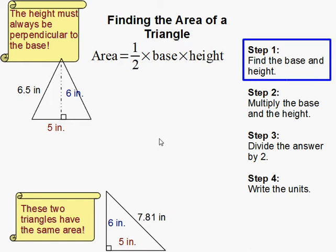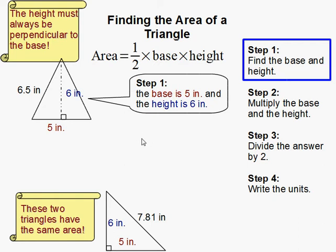The first thing we need to do is find the base and the height of the triangle. In this problem we are given that the base is 5 and the height is 6.